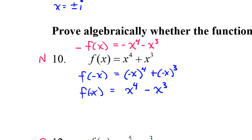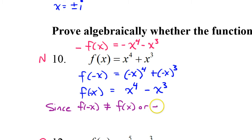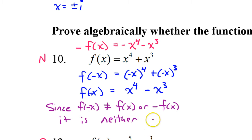So we make our conclusion statement: since f of negative x does not equal the original function or the opposite function, it is neither — meaning neither even nor odd. You have to show all this work. If I'm grading your test, I'm giving you a certain number of points for each part of the work.